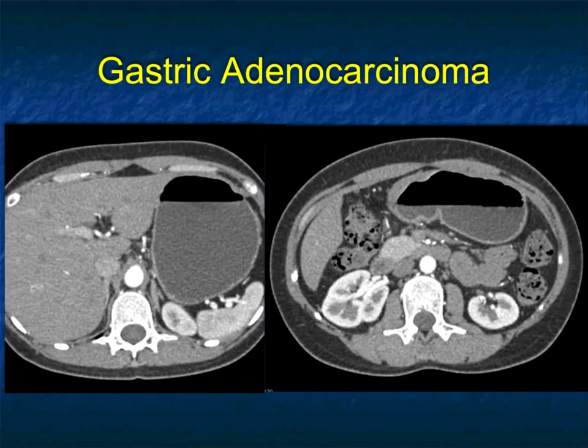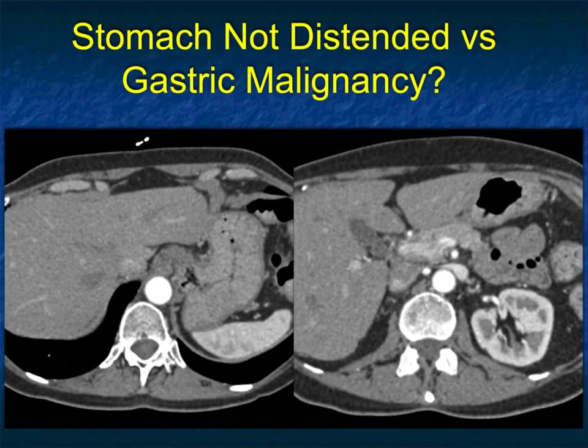Another example: a patient with abdominal pain, stomach well distended. Look at the antrum — you can see the antrum is infiltrated on those images. What about this case? Is this a tumor in the fundus of the stomach? Is there something going on here, or is this normal?